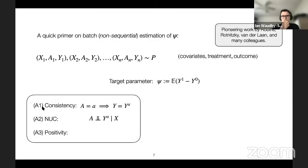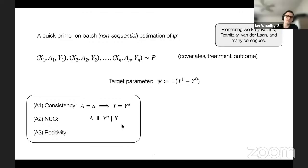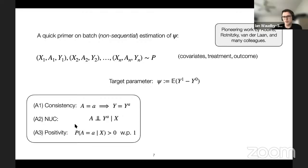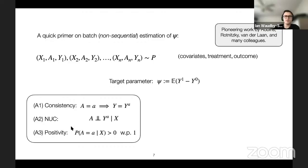The second assumption is no unmeasured confounding: treatments are as good as randomized within levels of covariate x. In a randomized experiment this holds by design. In an observational study, we need to collect a rich enough set of covariates to explain the confounding. The third assumption is positivity: everyone has some positive probability of being assigned to both treatment and control. In a randomized experiment this holds by design; in observational studies we must verify it.